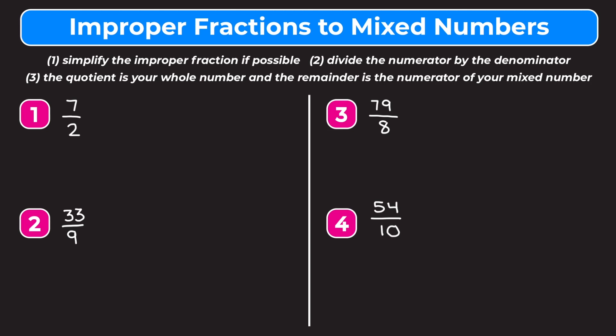Let's jump into example one, which is seven over two, or seven halves. We want to divide the numerator by the denominator, so I'm going to set up a division problem. We have seven divided by two. Two goes into seven three times, so we put a three up here. Two times three is six, so we put a six down and subtract to get a remainder of one.